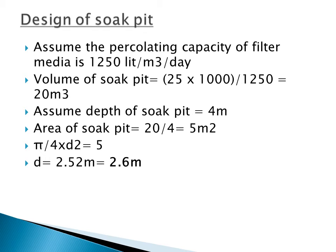The last part is to design the soak pit. You assume the percolating capacity of the filter media as 1,250 liters per square meter per day. The volume of the soak pit equals the total tank capacity divided by the percolating capacity: 25,000 divided by 1,250 gives 20,000 liters, which equals 20 cubic meters.